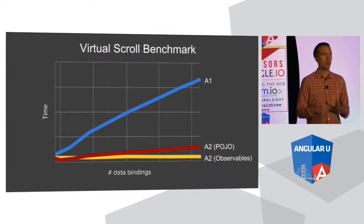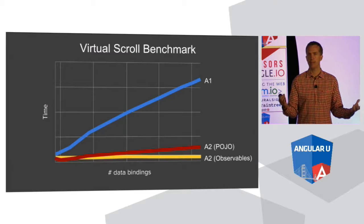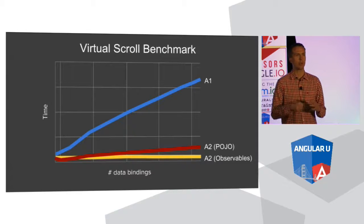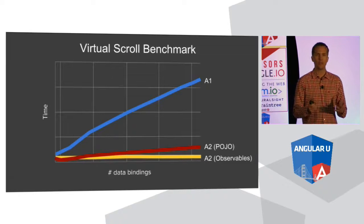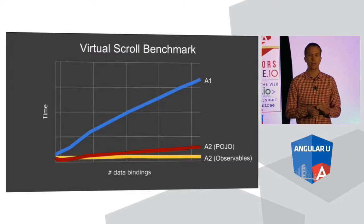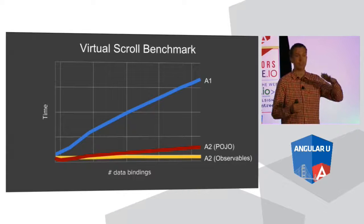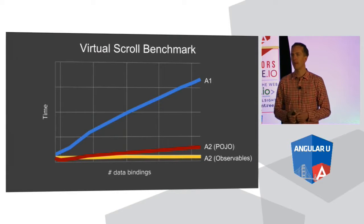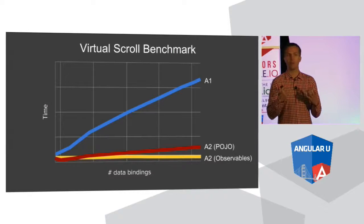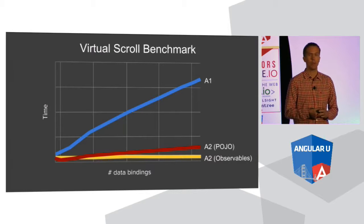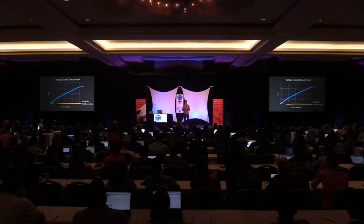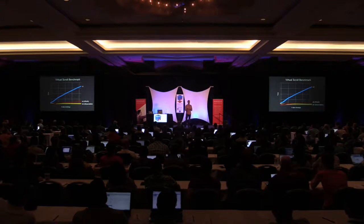We also wanted to find out how well Angular 2 scales as the data set scales. For the virtual scrolling benchmark, we graph performance as we increase the number of data bindings. For Angular 1, the time taken goes up as we add more data bindings. Angular 2's line gets a whole lot flatter — so out of the box you get enormous headroom. We also enable you to take advantage of immutable data structures or observables like the Rx library to make performance scale linearly as you add more data bindings.